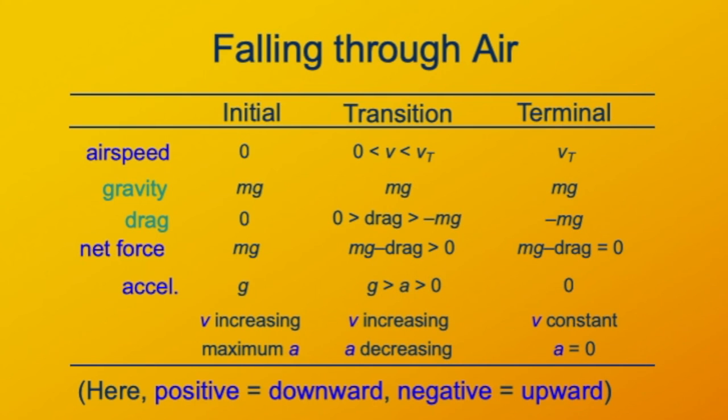So to summarize what's going on in these three phases, in the initial phase, the velocity is increasing at its maximum value, which is the gravitational acceleration. In the terminal phase, the velocity is constant.